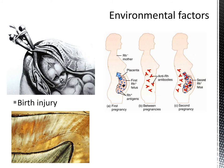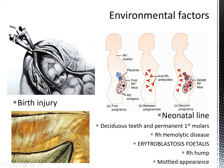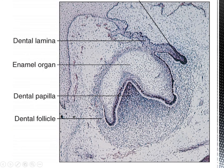During birth, because of injury during forceps delivery, there may be prominent neonatal lines that may be noted. The neonatal lines are usually seen in all the deciduous teeth and the permanent first molars. In case of Rh incompatibility, where the mother produces antibodies against the child, you may have a condition called erythroblastosis fetalis, where the enamel appears mottled.